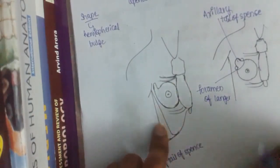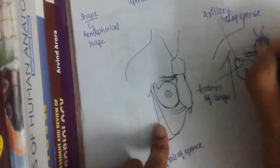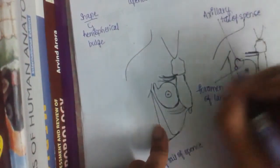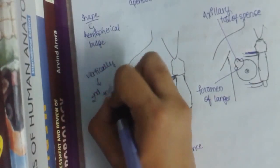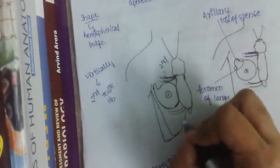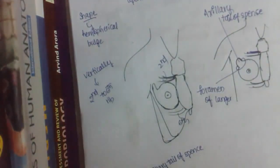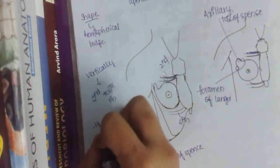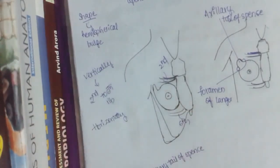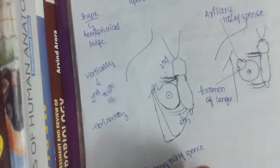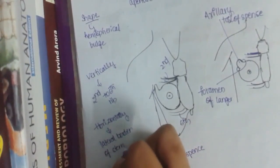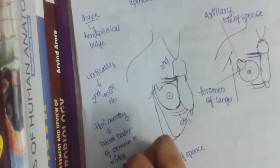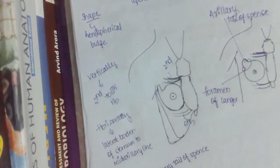Regarding the extent of the breast: vertically, it extends from the second rib to the sixth rib. Horizontally, it extends from the lateral border of the sternum to the mid-axillary line. This defines the overall extent of the breast.